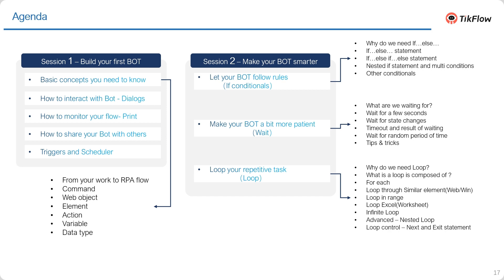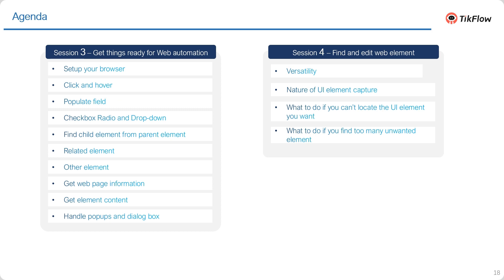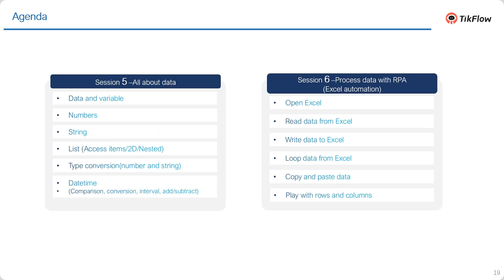Session two will cover if-conditionals, while, and loop — very important, because that's how you make your bot clever and do repetitive tasks. Session three, we will dive into web automation — there's tons of daily work based on this. Session four covers advanced skills about web elements — how to locate elements by editing them. Session five is about preparing and processing data: what is data, what is a variable, what are numbers, strings, text, lists, and how to convert them. Session six will look into Excel automation, with demos combining Excel and web automation so you know how to let your RPA work across different platforms.